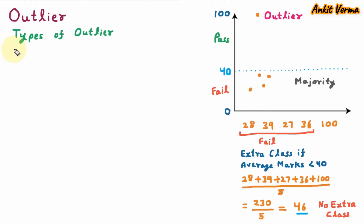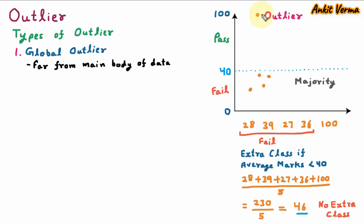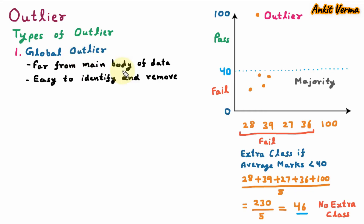Now we are learning types of outlier. The first type is global outlier. Global outlier is far from the main body of data. We can see that this outlier is very far from other data points. Global outlier is easy to identify and remove — we can easily check this and remove this.